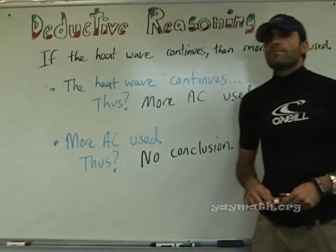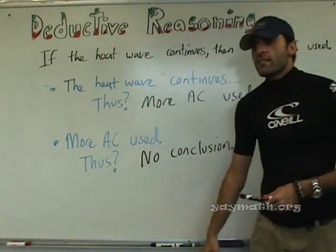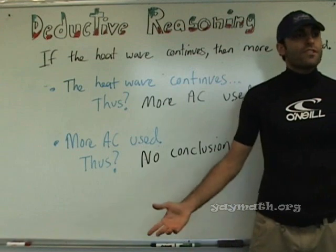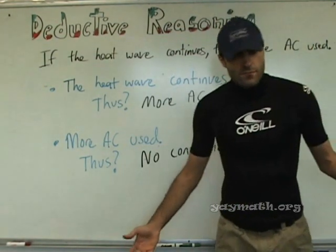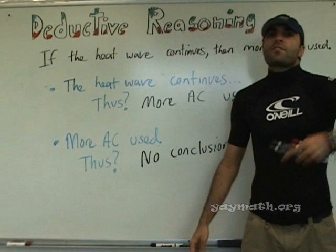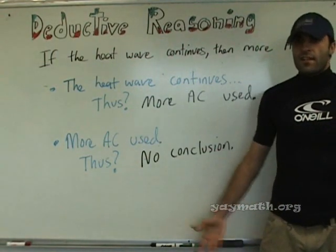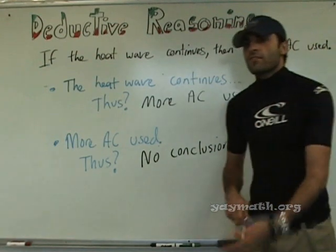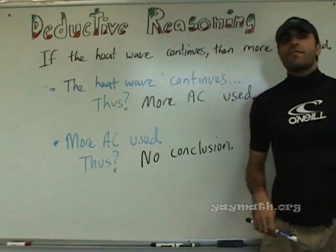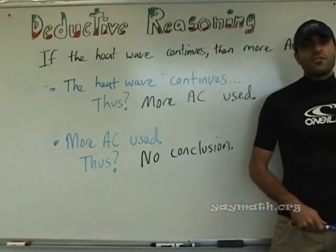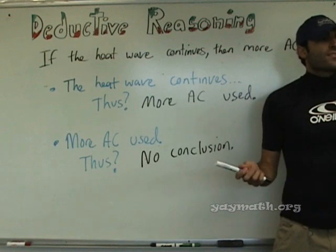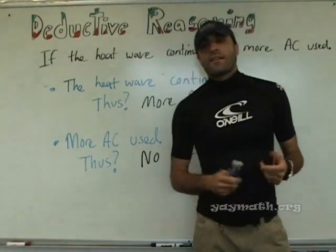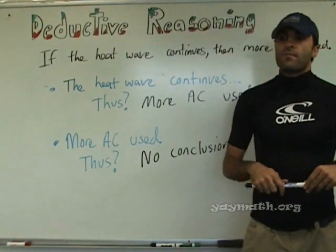If I live in Los Angeles, then I live in California. I live in Los Angeles — conclusion: I live in California. Susie lives in Los Angeles — conclusion: Susie lives in California. But if Susie lives in California, conclusion? No conclusion about Los Angeles. A counter example would be San Jose — she could live in San Jose.